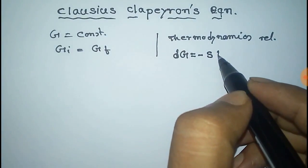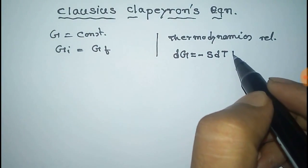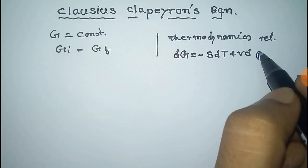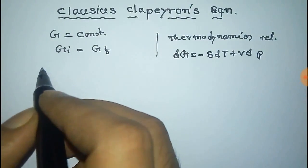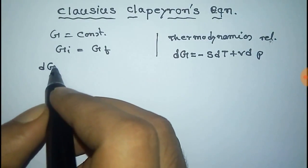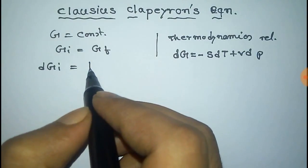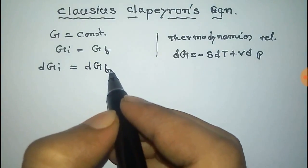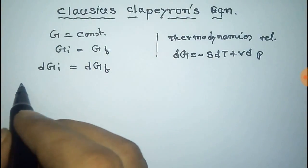The thermodynamics relation is dG = -S dT + V dP. So dGi equal to dGf. After derivative over it we get this.